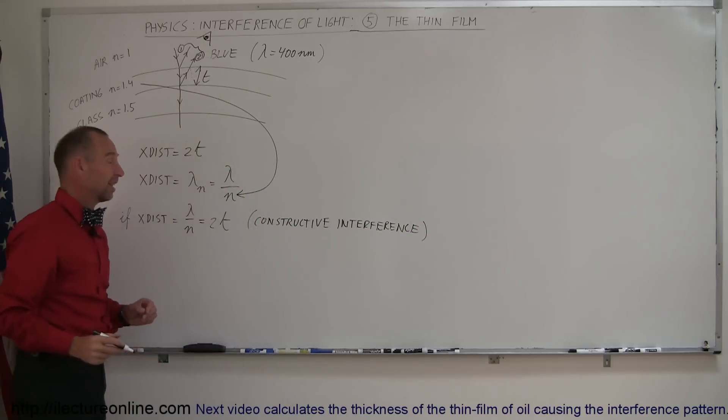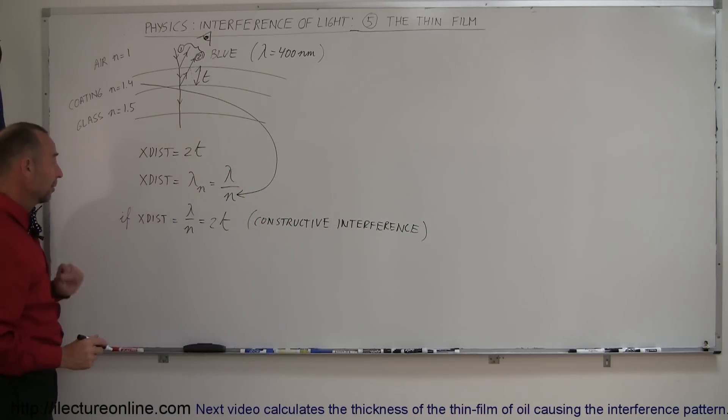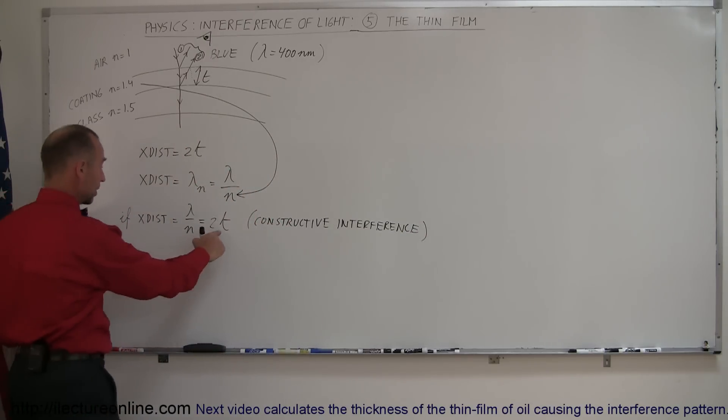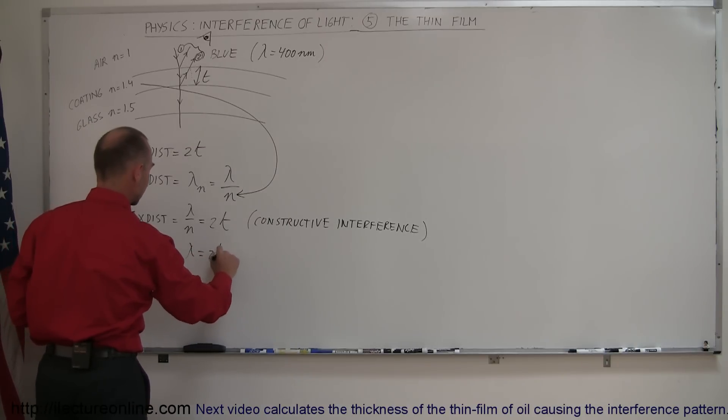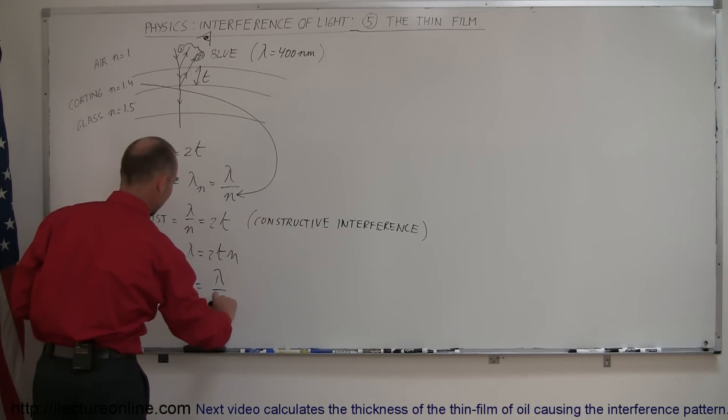And now the question comes in, how thick do they need to make the film to make that happen? Well, we're looking for t, so we can say that lambda is equal to 2t times n, or in this case, t is equal to lambda divided by 2n.